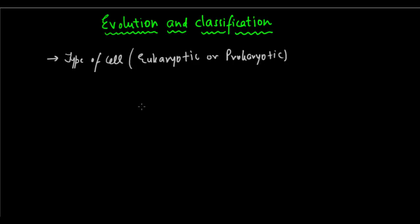Once that's done, we move on to the next factor, the next basis of classification: the number of cells, whether unicellular or multicellular.